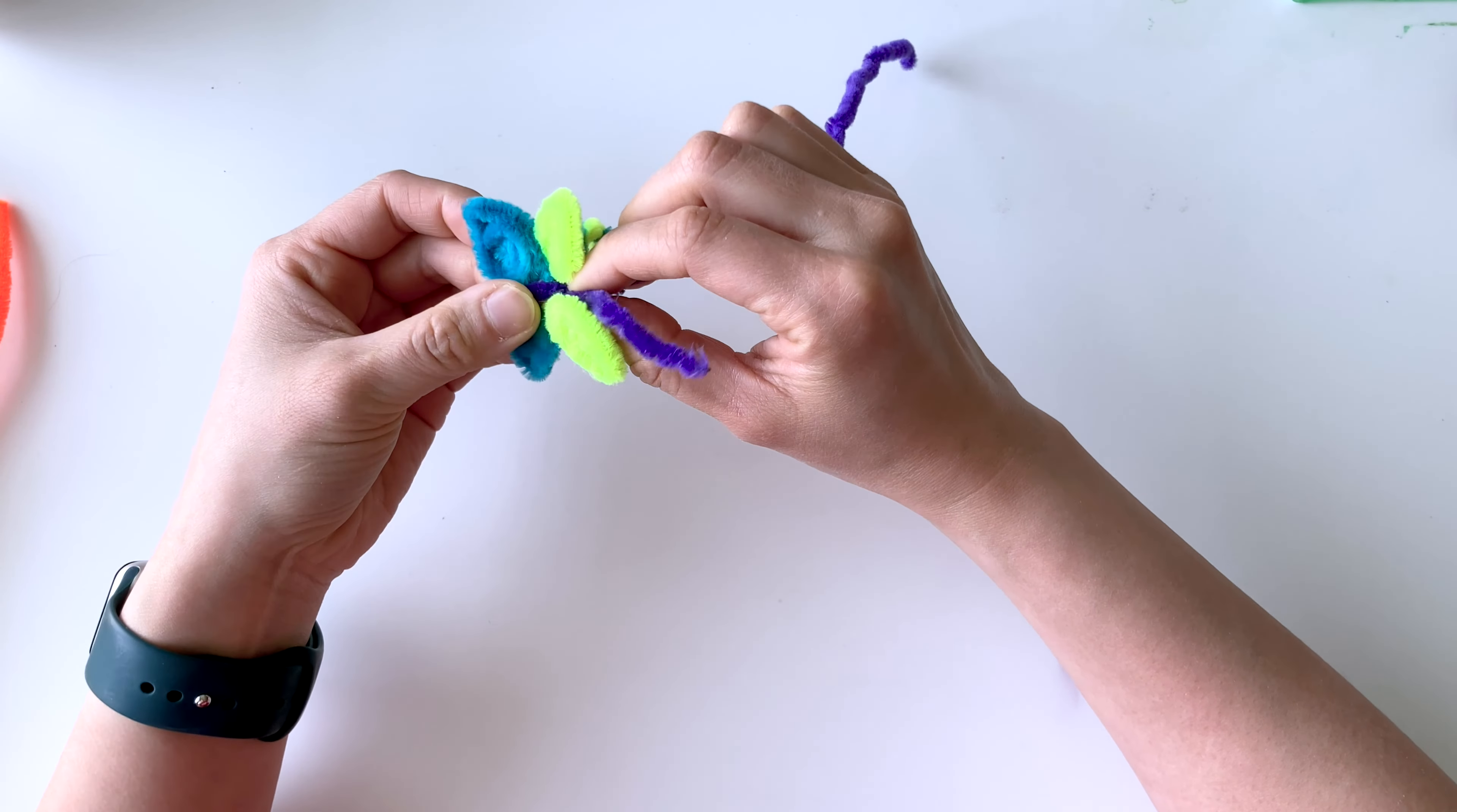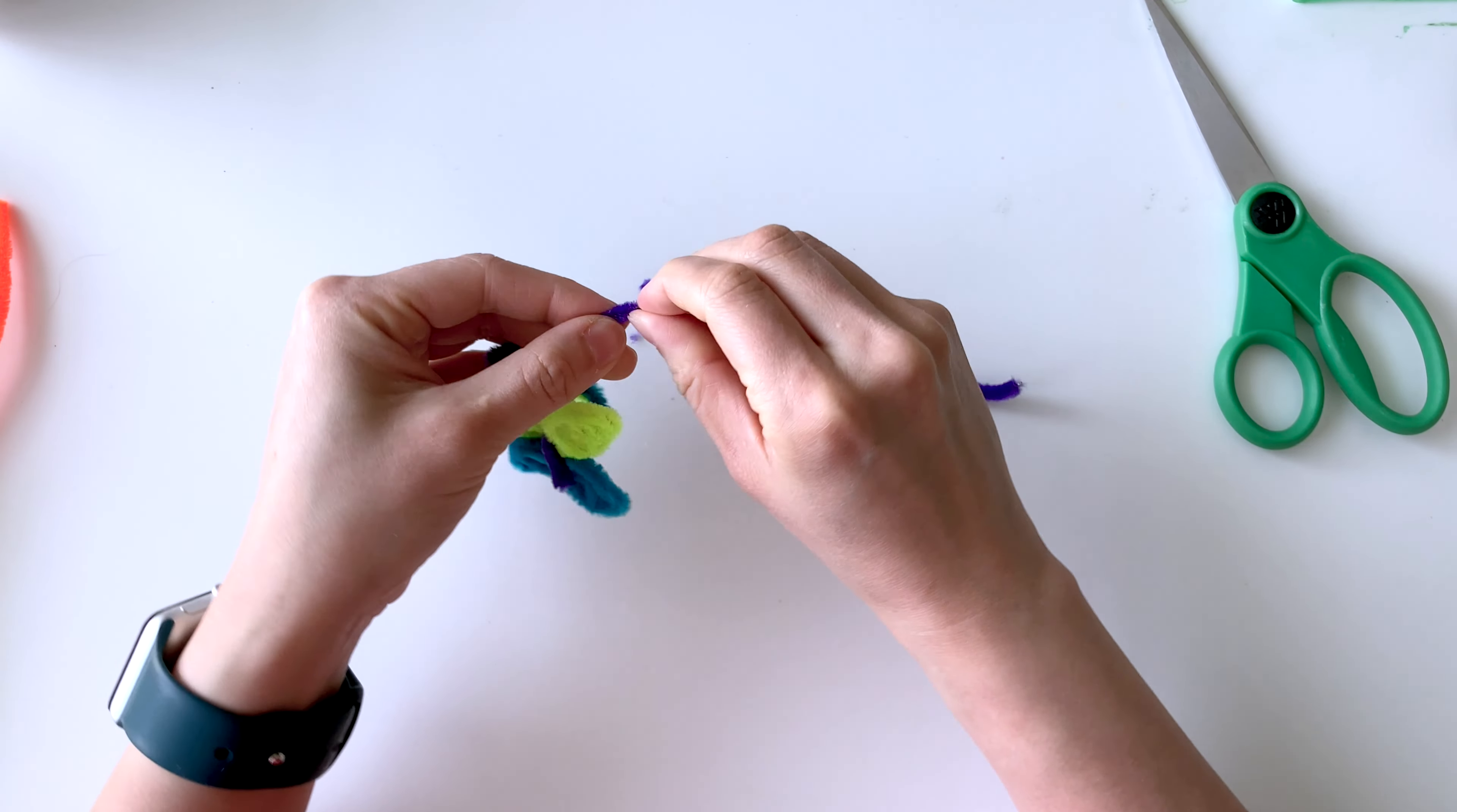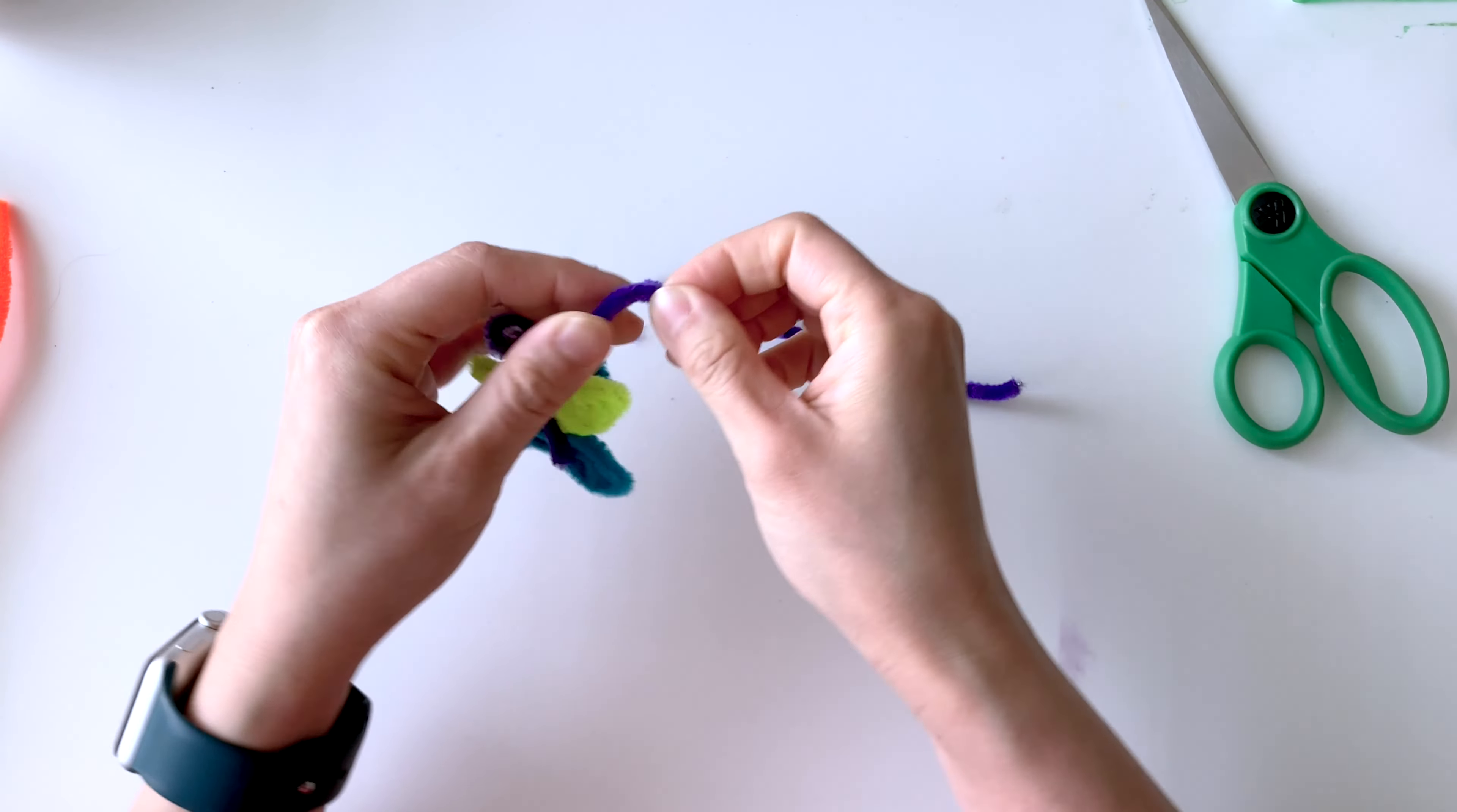And these will be the antennas for the butterfly. At this point you actually do need to use scissors so that you can cut the antennas so that they are approximately the same length. I'm going to curl the antennas a little bit, doesn't have to be a full curl like you saw with the wings. It's going to be a little bit more loose.